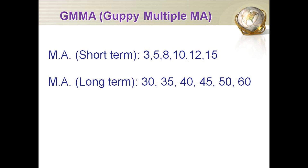The short-term speculative traders are represented by a group of moving averages with a relatively short time frame. The number of days used are 3, 5, 8, 10, 12, and 15.